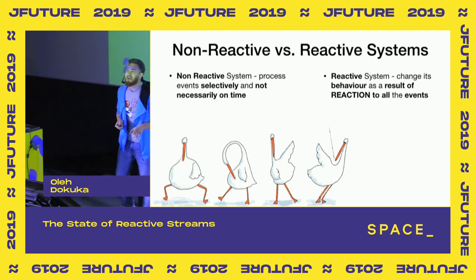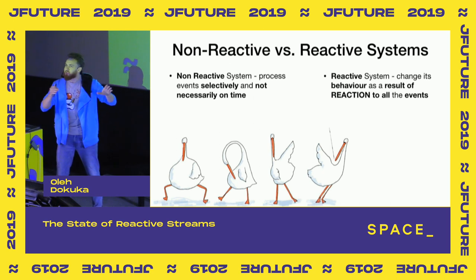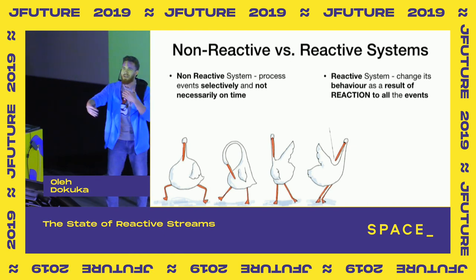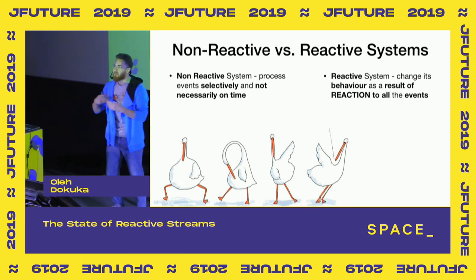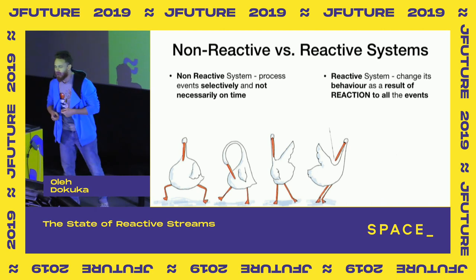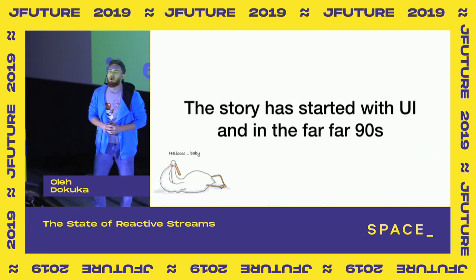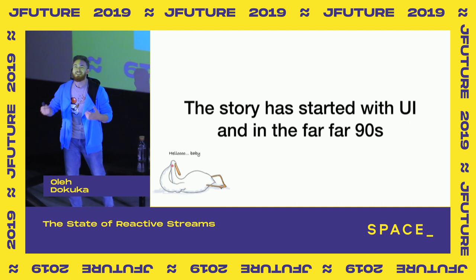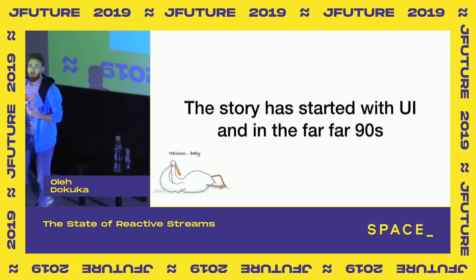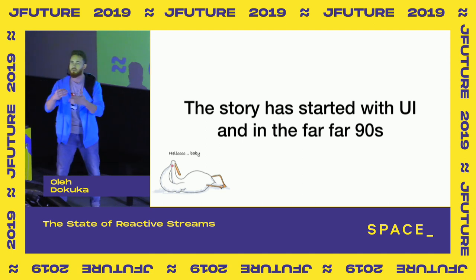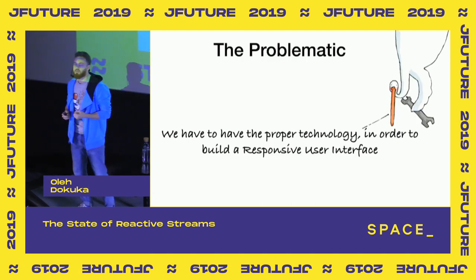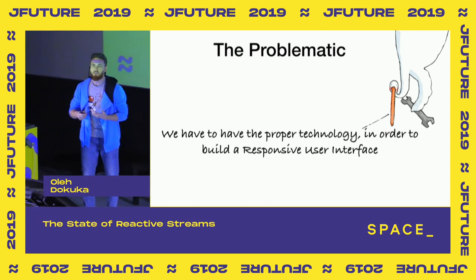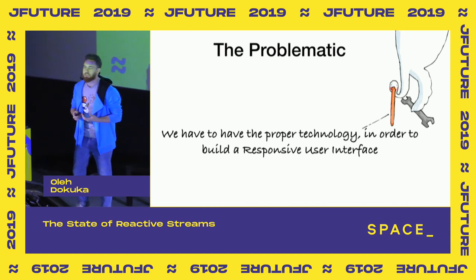Our talk is about reactive streams. Remember that reactive systems are mentioned at the very beginning of the history, and we will see how reactive systems impacted the evolution of reactive programming and reactive streams. However, the story started with UI — because in the 1990s, two big companies, Microsoft and Macintosh, started fighting for the market of good UI and good user experience in operating systems. The problem of this period was that in order to build a properly responsive UI, we had to use the right technology.